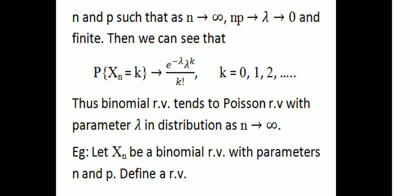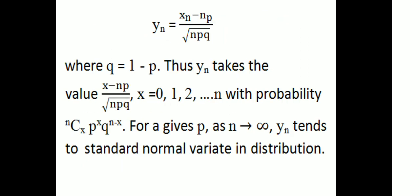For example, let Xn be a binomial random variable with parameters n and p such that as N tends to infinity, np tends to lambda which is finite. Then probability of Xn = k tends to e^(-lambda) times lambda^k divided by k factorial, for k = 0, 1, 2, 3. So this binomial random variable tends to a Poisson random variable with parameter lambda in distribution as N tends to infinity. In a second example, let Xn be a binomial random variable with parameter n and p; define Yn = (Xn minus np) divided by root(npq), where q = 1 minus p. For a given p, as N tends to infinity, Yn tends to a standard normal variable in distribution.